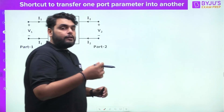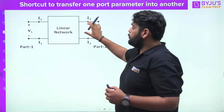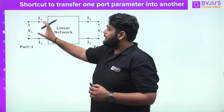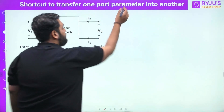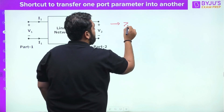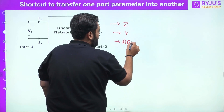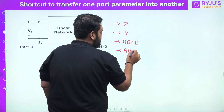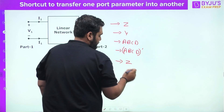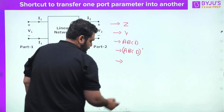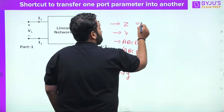As you know, we have a two-port network. The meaning of two-port network is that you have port one and port two, in which the current entering and leaving are the same — that is the meaning of a port. Now according to these two-port parameters, we have Z parameter, Y parameter, ABCD, ABCD-dash (also known as T-dash), H parameter, and G parameter.